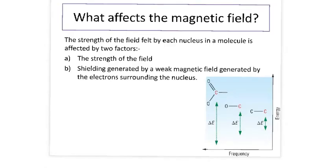Here we come to the bit that interests us as chemists rather than physics, and that's what affects the magnetic field. The strength of the field felt by each nucleus in the molecule is affected by two factors. The first one is the strength of the field, the external field generated by the NMR machine. That's going to be the same for every NMR sample and every atom in that molecule. So that's not going to change.